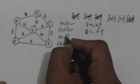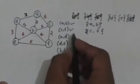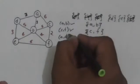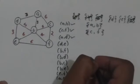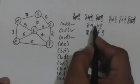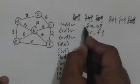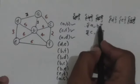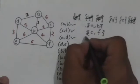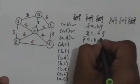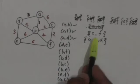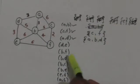Now the next edge is AD. Vertex A and vertex D are both in different sets, so we will select this edge to include in the minimum spanning tree. We will unite the sets containing vertex A and vertex D, and this new set is the union of the set containing vertex A and the set containing vertex D.